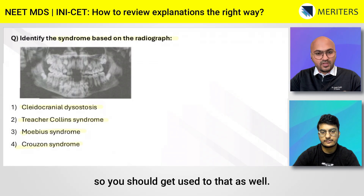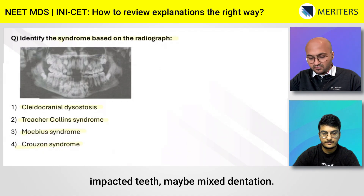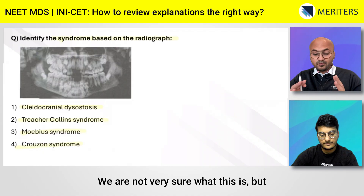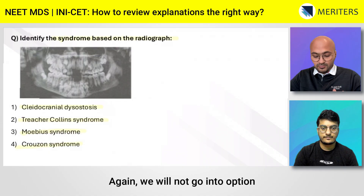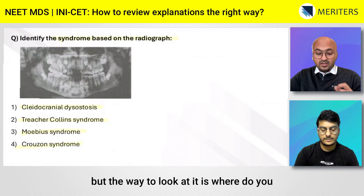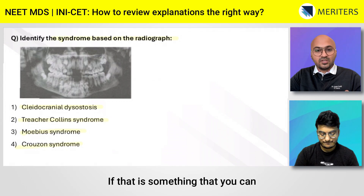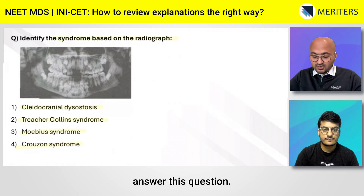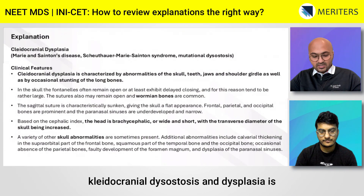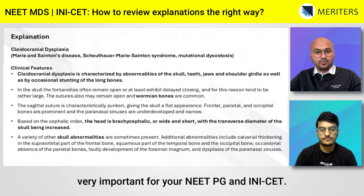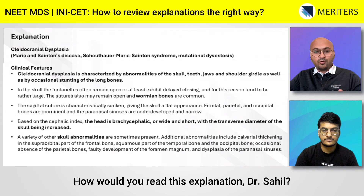On the OPG we see multiple impacted teeth and possibly mixed dentition. The key finding to identify is multiple supernumerary teeth. If you can recognize that, it is more than enough to answer this question. Of all the syndromes listed, cleidocranial dysostosis and dysplasia is very important for your NEET, PGI, and NICT exams — it is high-yield and comes very frequently.